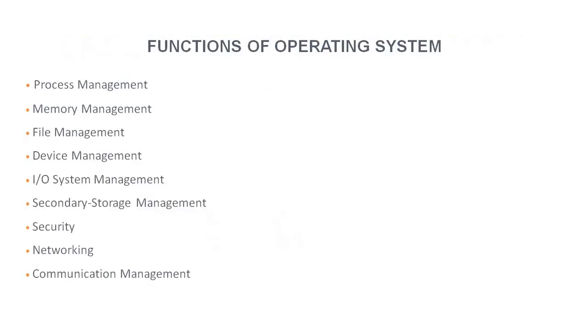What are the functions of operating system? Operating system manages the processes, manages the memory, manages the files. It manages the devices, input-output system. It manages the secondary storage. It manages security. It will look after the networking part and communication management.